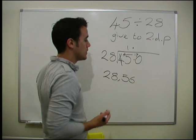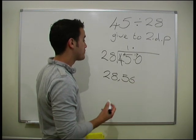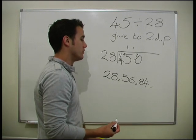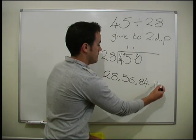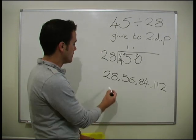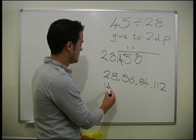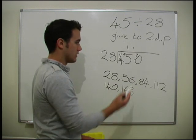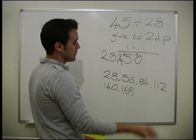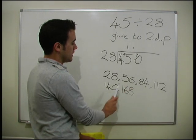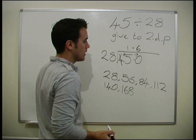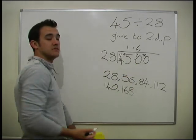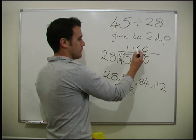So we've got 56, add 28 brings us up to 84, add 28 brings us up to 112, add another 28 brings us up to 140. So how many 28s is that? 1, 2, 3, 4, 5, 6 — six 28s. So we put a 6 here. How many left over? 2. So we have to put our 0 in again and we put a 2 in. 28 into 20 — none are going to go. So there we go, we've got to our 2 decimal places.